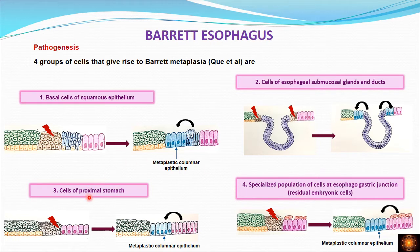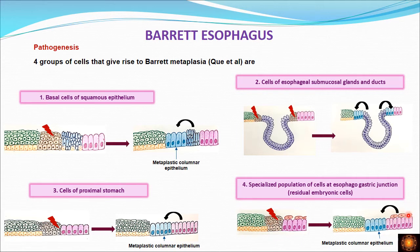The third group of cells are directly the cells of the proximal stomach — specifically the foveolar cells at the cardioesophageal junction, which start differentiating into metaplastic columnar epithelium. The fourth group consists of reserve embryonic cells or totipotent cells present at the esophagogastric junction. When there is an injury stimulus, these reserve embryonic cells differentiate into metaplastic columnar epithelium, replacing the damaged squamous epithelium. Metaplastic columnar epithelium can develop from all four types of cells.